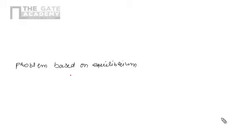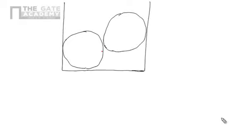Let's take another problem based on equilibrium — a very interesting and lengthy problem, useful for understanding equilibrium problems. There is a vessel containing two spheres of the same radius R resting as shown. The two spheres are in contact with each other and with the walls of the vessel.